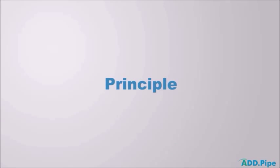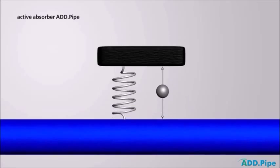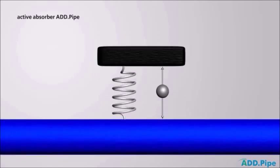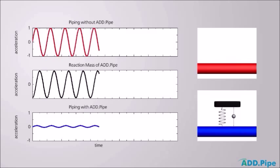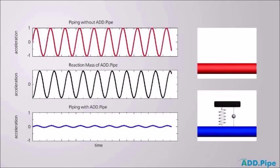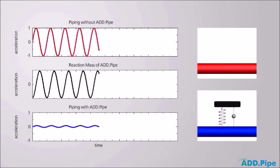The principle of ADD pipe. The actively controlled movement of a reaction mass produces damping forces by means of which the vibrations of the piping system are reduced. The vibrations of the pipe without active absorber, here displayed as a red curve, are relatively high.